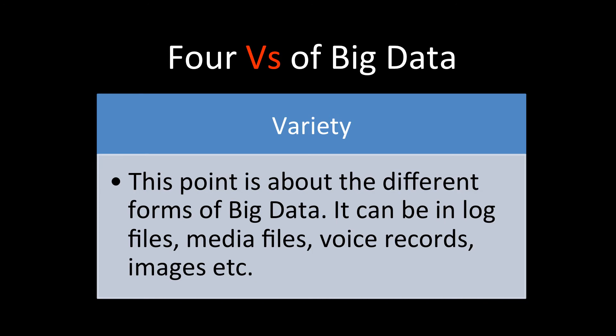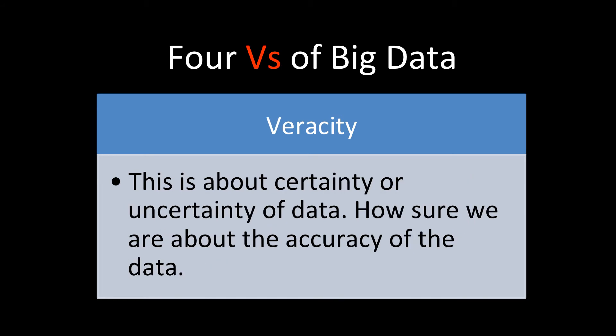Then comes veracity, which is about certainty or uncertainty of data—how sure we are about the data's accuracy. Because we have a large amount of data, we must ensure the quality is correct and whatever is stored in the data is perfect.